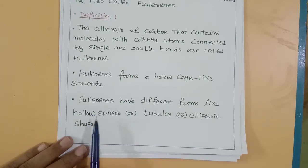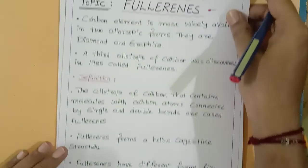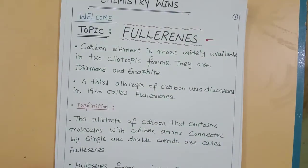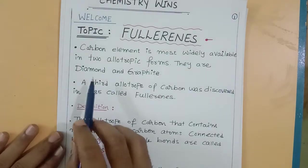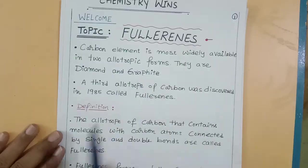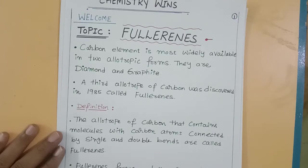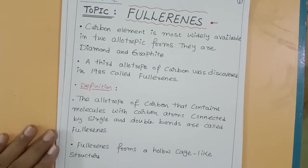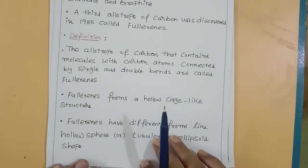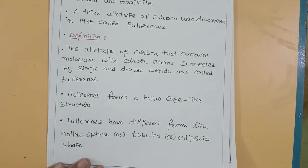Fullerenes form a hollow cage-like structure. Fullerenes have different forms like hollow sphere, tubular, or ellipsoidal shape. Carbon has two major allotropic forms, diamond and graphite, but in 1985 scientists discovered another carbon allotrope: fullerenes. The allotropes of carbon contain molecules with carbon atoms connected by single and double bonds.